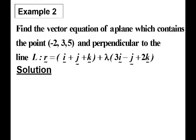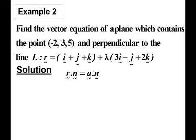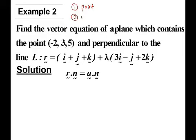Find the vector equation of a plane which contains the point N and is perpendicular to the line L. The vector equation of a plane is R dot N equal to A dot N, where A is our point. We need to find a point which is on the plane and the second one is a normal vector.